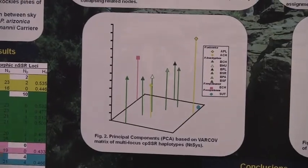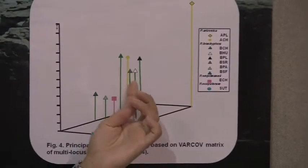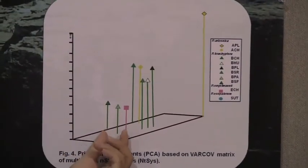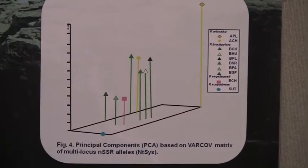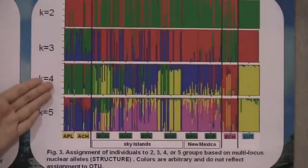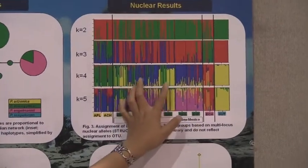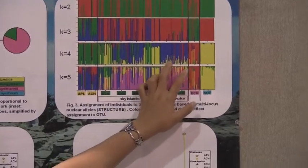However, in figure 4, the Sky Island population here is a little bit separate from the New Mexico population there. It's also reflected in figure 3, especially when K equals 4. In figure 4, you can see a little bit of difference between the Sky Island population and the New Mexico population.